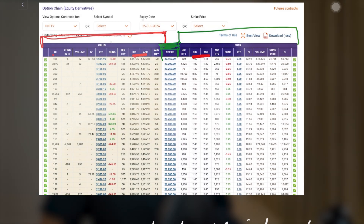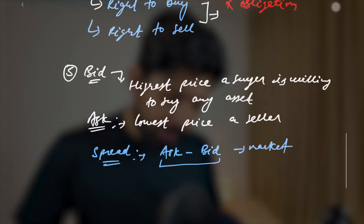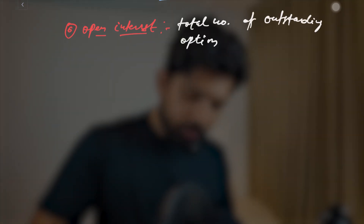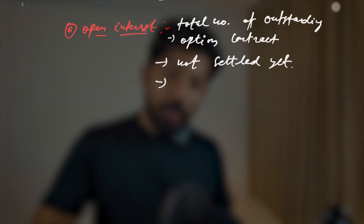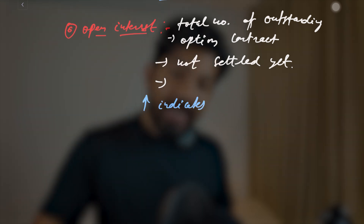Next is a very important concept: OI, or open interest. Open interest is the total number of outstanding option contracts that have not been settled yet. High open interest indicates that a large number of participants are in the market — these contracts have not yet been exercised. Change in OI simply means how many contracts have been sold or bought recently.